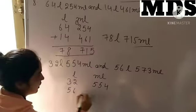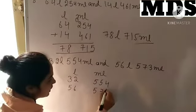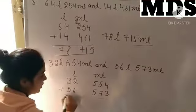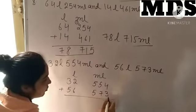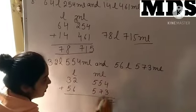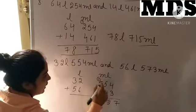Then we add it. So, 4 plus 3 is 7, 7 plus 5 is 12. Here, 1 carry.